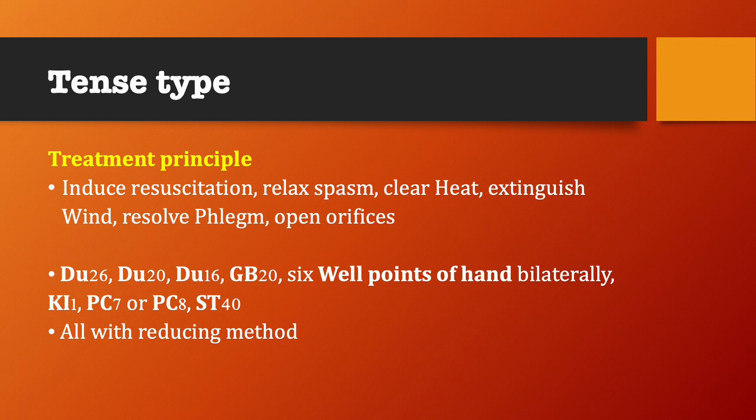For the tense type, treatment principle: induce resuscitation, relax spasm, clear heat, extinguish wind, resolve phlegm, open orifices. Points used: GV26, GV20, GV16, GB20, six jingwell points of the hand bilaterally, Kidney 1, PC7 or PC8, Stomach 40, all with reducing method.